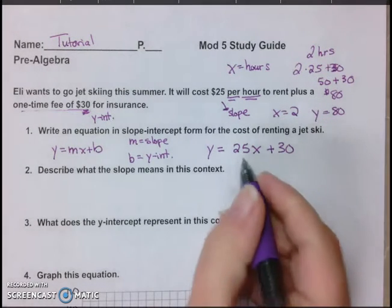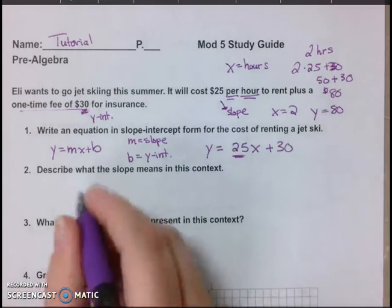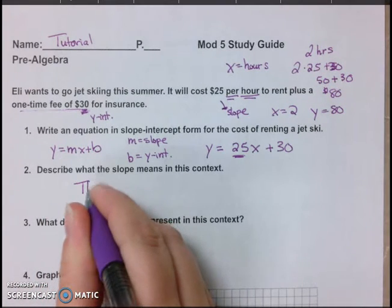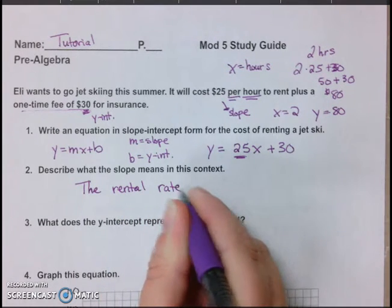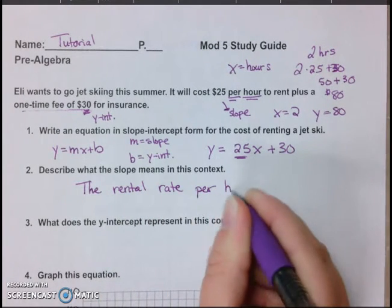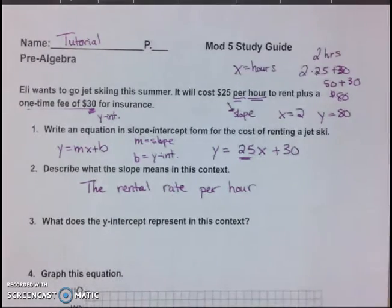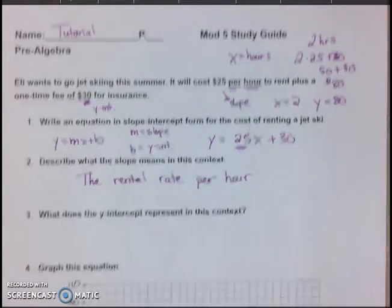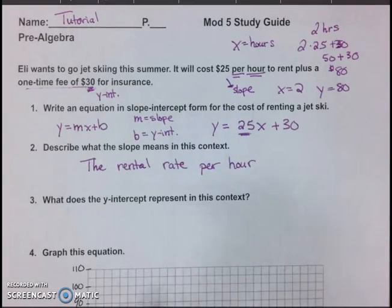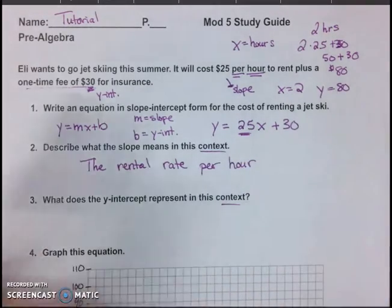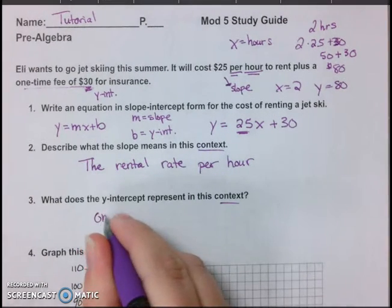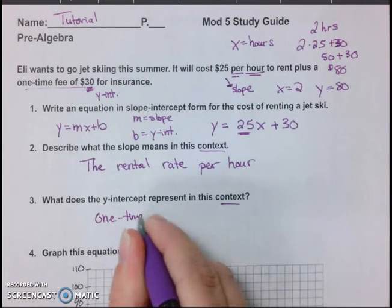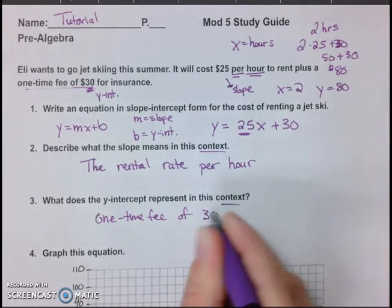So what's the slope mean in context? Well, that's how much they're charging per hour. So I'm going to say it is the rental rate per hour. That's what the $25 means, is how much it costs an hour. So what's the y-intercept represent in this context? So context means in this problem in particular, talking about this jet skiing problem.